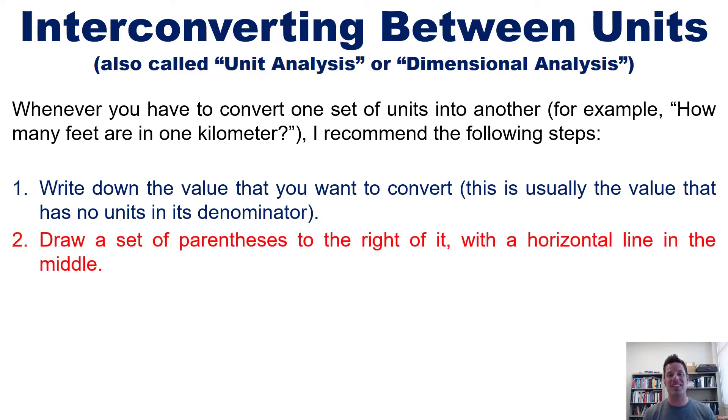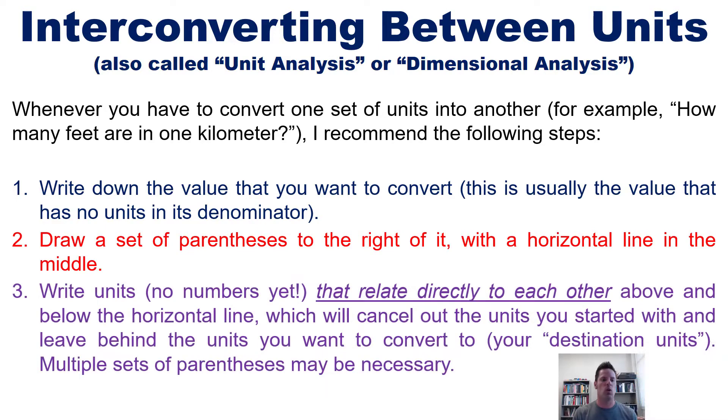Two: draw a set of parentheses to the right of that value with a horizontal line in the middle of that set of parentheses. And three: write units, don't write any numbers, that relate directly to each other above and below that horizontal line, which will cancel out the units that you started with and leave behind the units that you want to arrive at, or convert to. I call those your destination units. Multiple sets of parentheses may be necessary. In other words, focus on units first, not numbers.